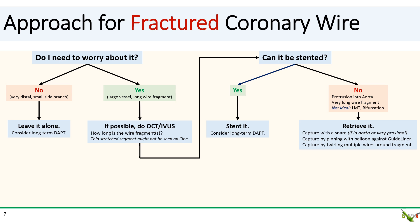Third, you can try wire twirling. The idea here is to pass multiple wires — usually three or more — and twirl the wires around your wire fragment. Once the wire fragment is nicely intertwined with your other wires, you can then pull the whole thing back as a unit. Sometimes using a guideliner to slide over the intertwined wires before pulling is useful.